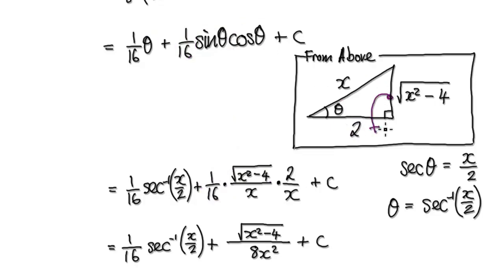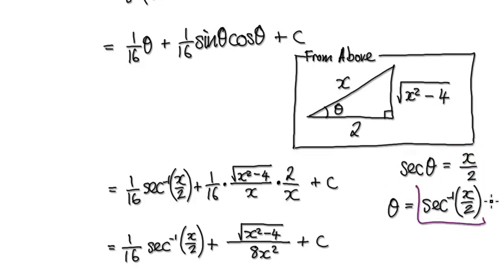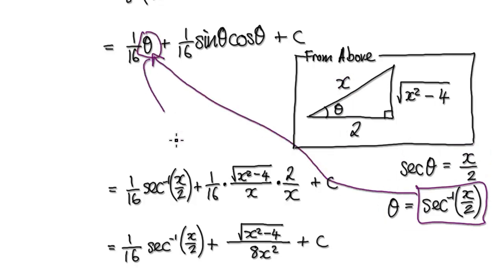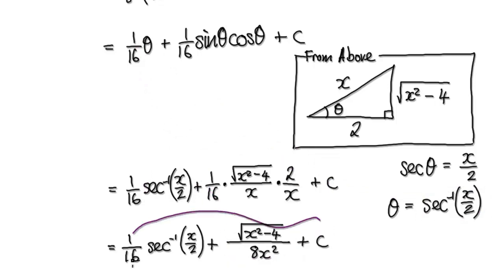And then we need to translate theta. Looking at this: secant theta equals x over 2. If you want theta on its own, inverse both sides, so that gives you theta equals arcsec(x/2). We can put this in for theta, and that gives us this thing here. Tidy this thing up, and that gives you this. So your overall answer would be this thing here.